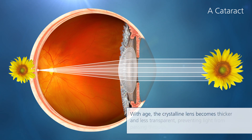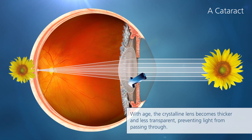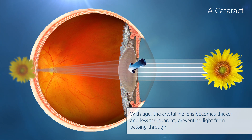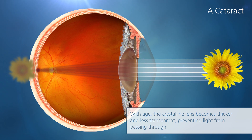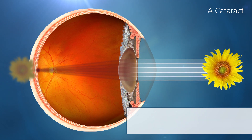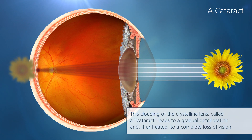With age, the crystalline lens becomes thicker and less transparent, preventing light from passing through. This clouding of the crystalline lens, called a cataract, leads to a gradual deterioration and, if untreated, to a complete loss of vision.